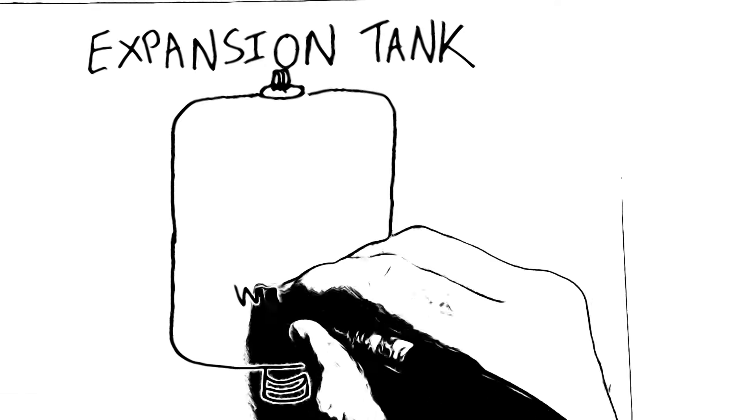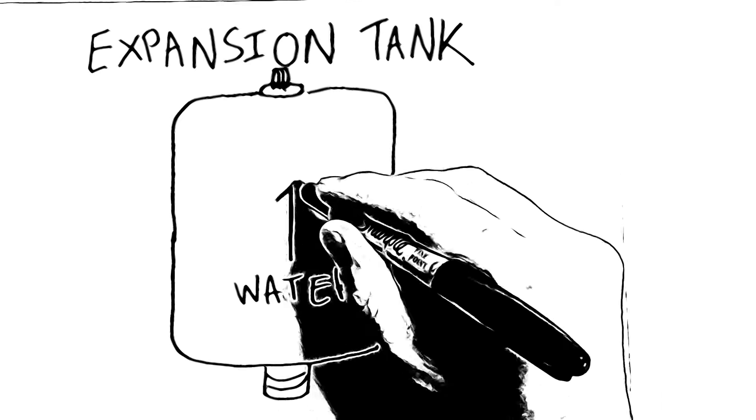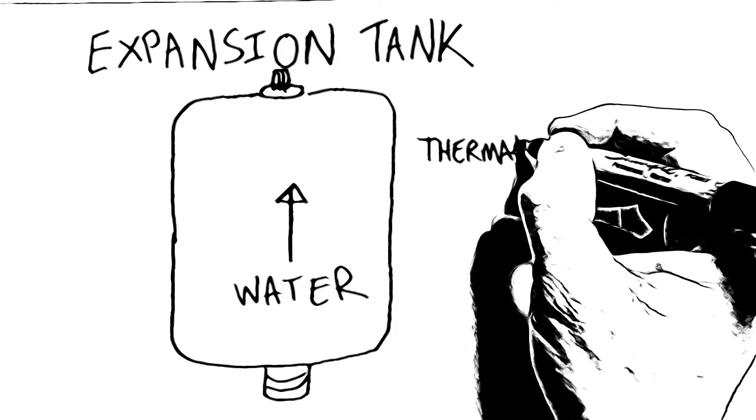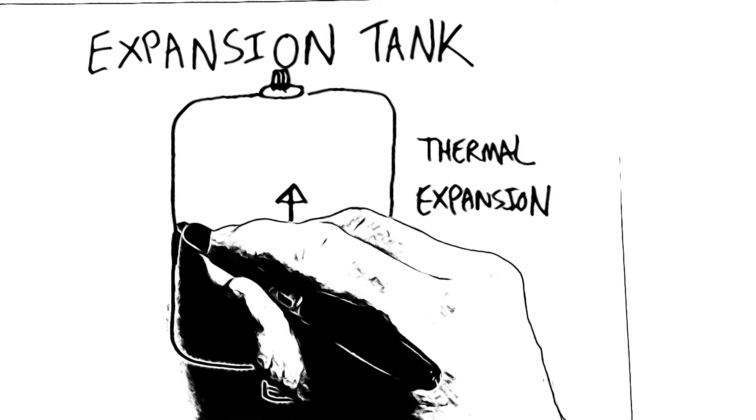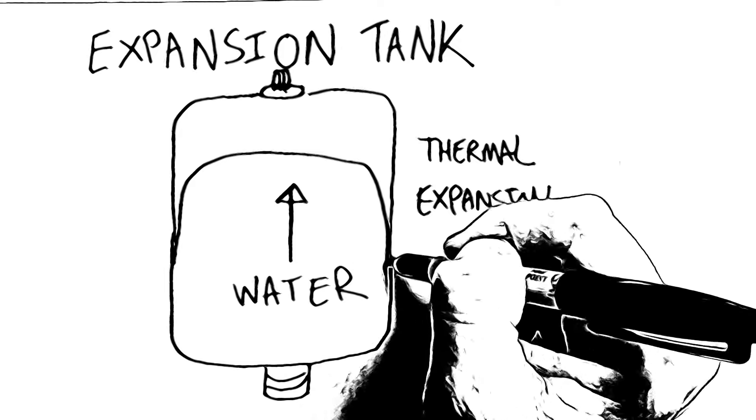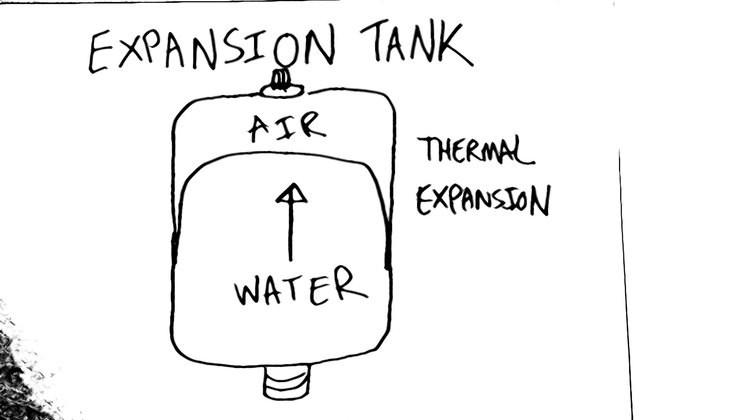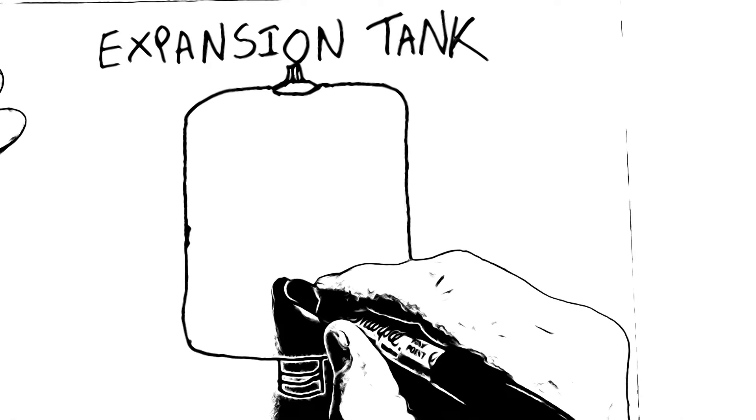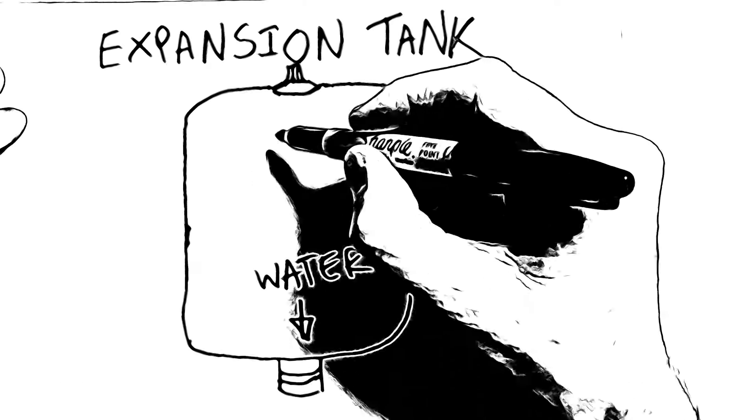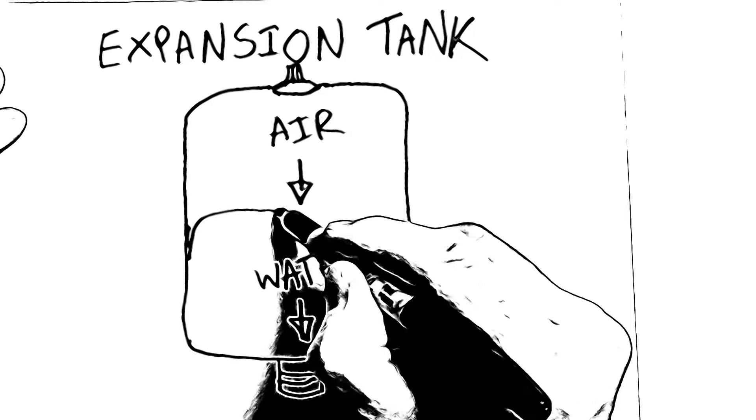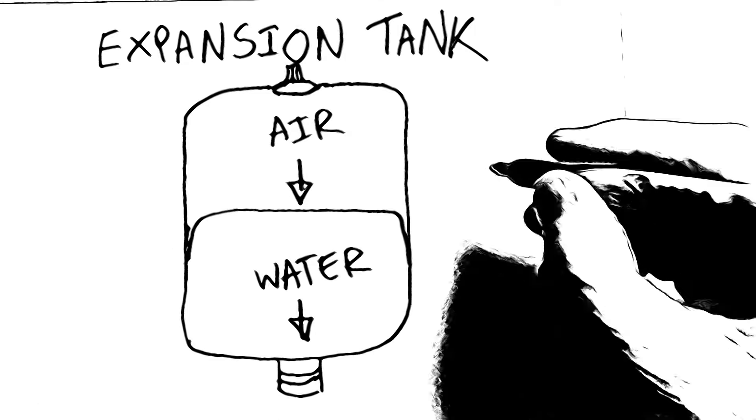The purpose of an expansion tank is to allow for the thermal expansion of the water as water heats up and it does expand. Inside of the tank, the diaphragm will flex, pushing and compressing the air as the water expands. As water is used at the fixtures, it flows out of the expansion tank and the air pushes the diaphragm back down.